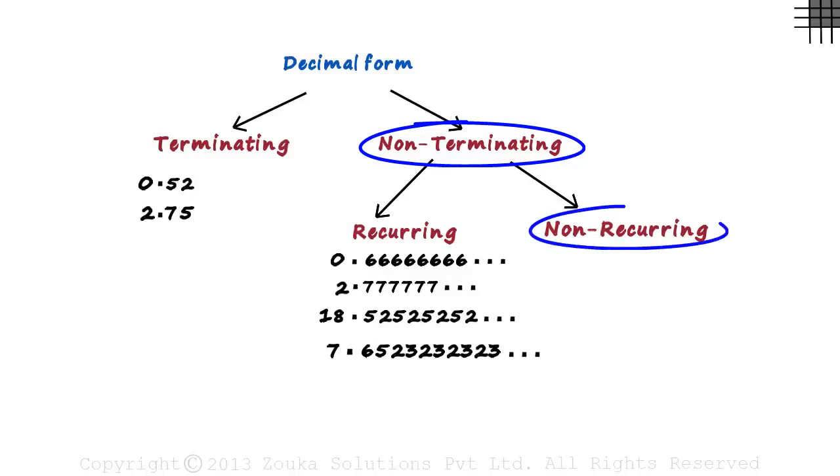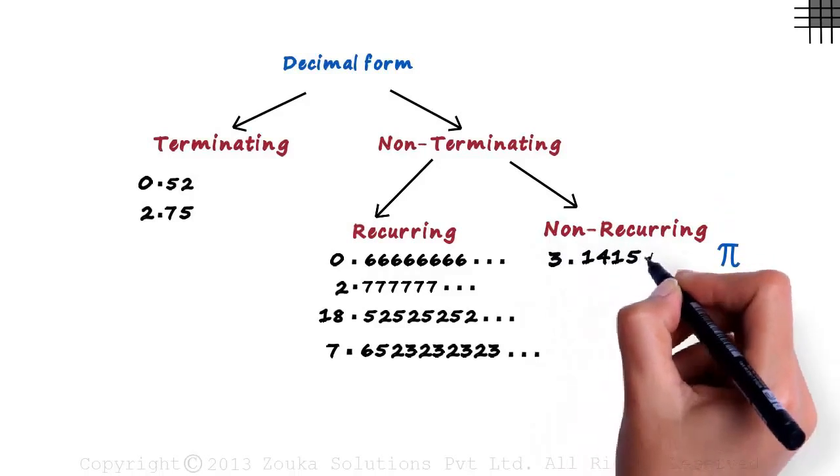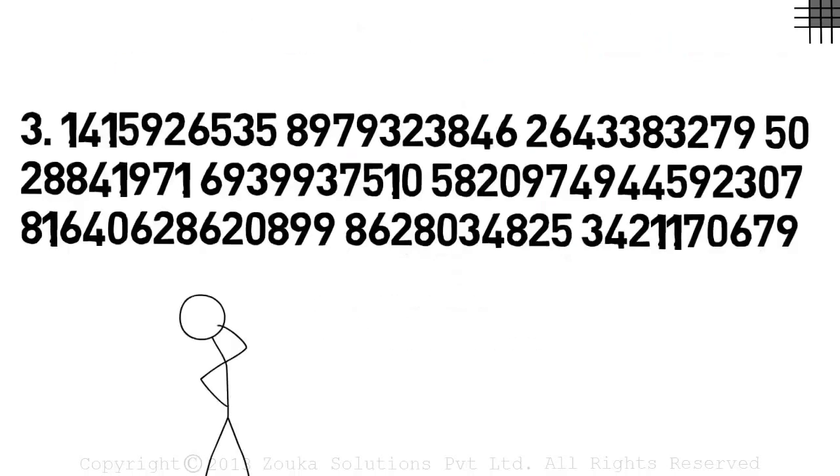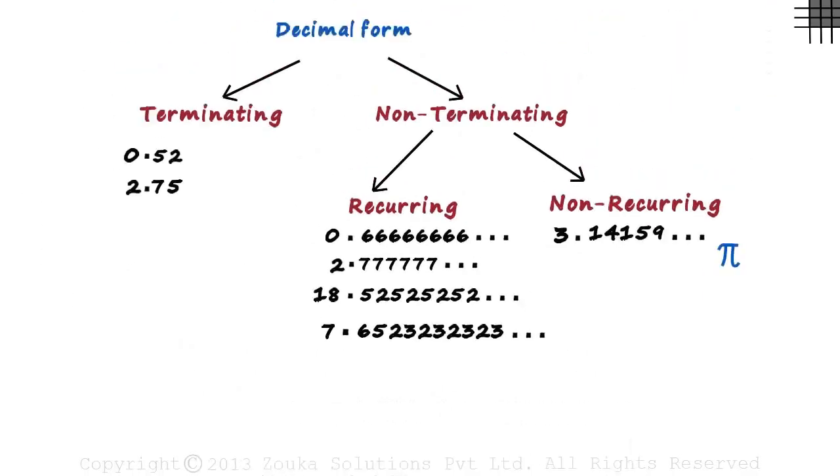Non-terminating non-recurring simply means that the number does not end and the digits after the decimal point do not have a specific pattern. The best example would be pi: 3.14159 and so on. The number does not end and even if you have 100 digits after the decimal point, you will not find any pattern or any indefinite repetition of digits. Here's the value of pi up to 100 digits. Look at the digits carefully. You will see no pattern whatsoever in here. That is the reason it's called non-recurring.